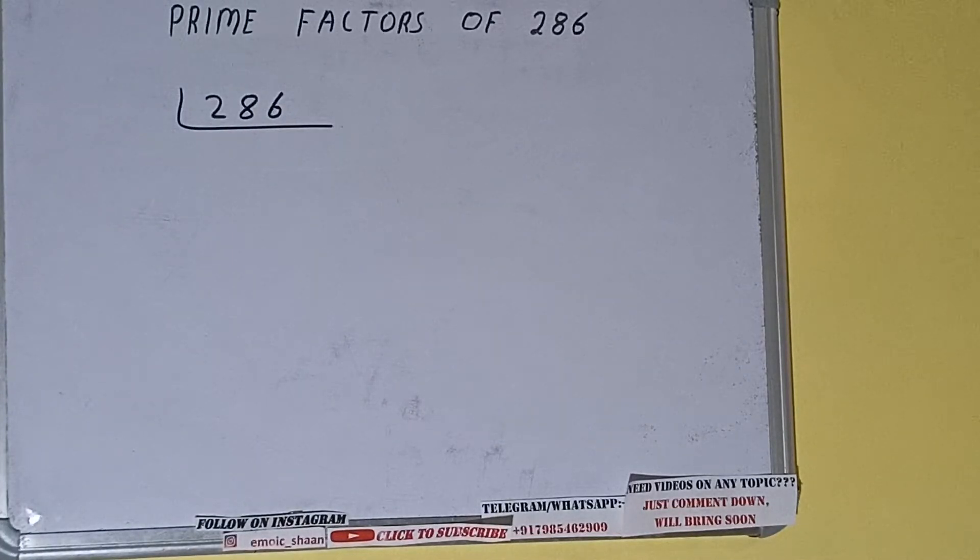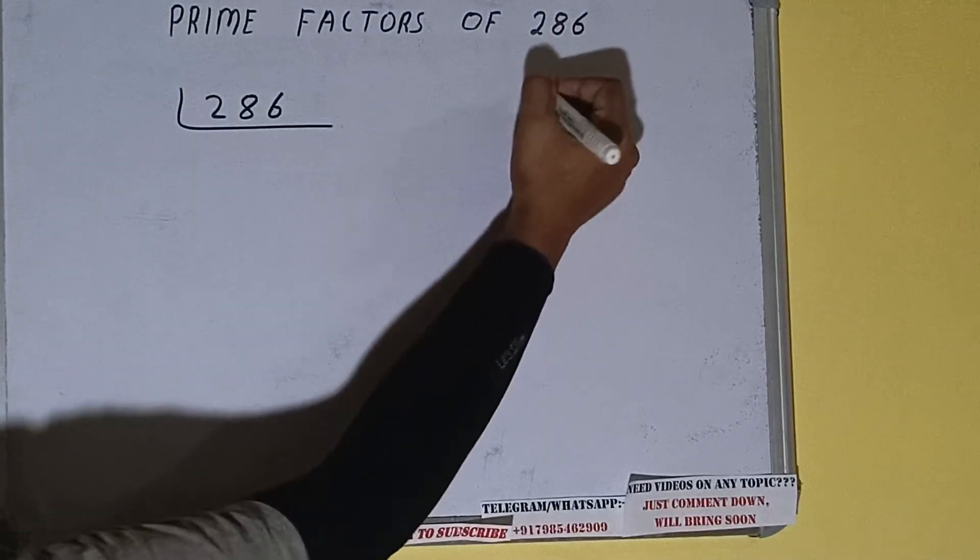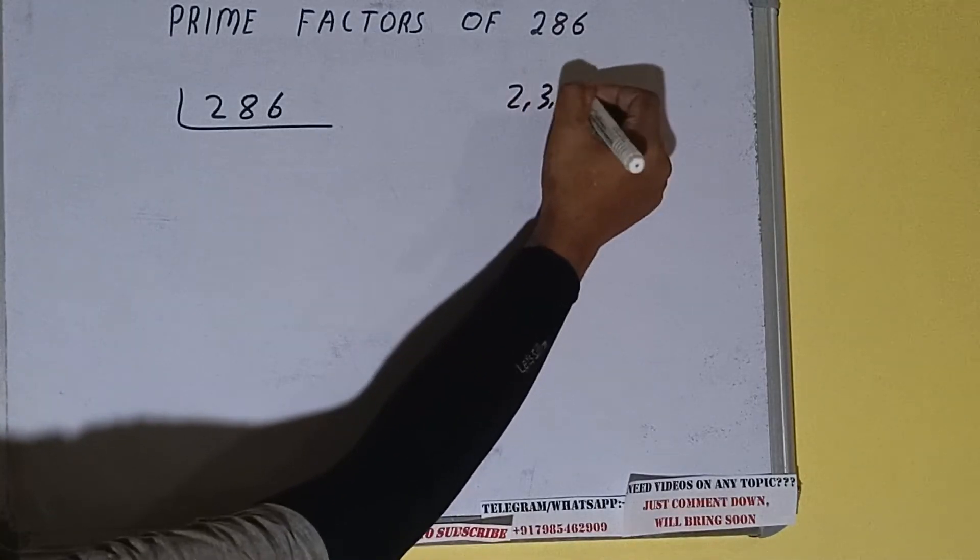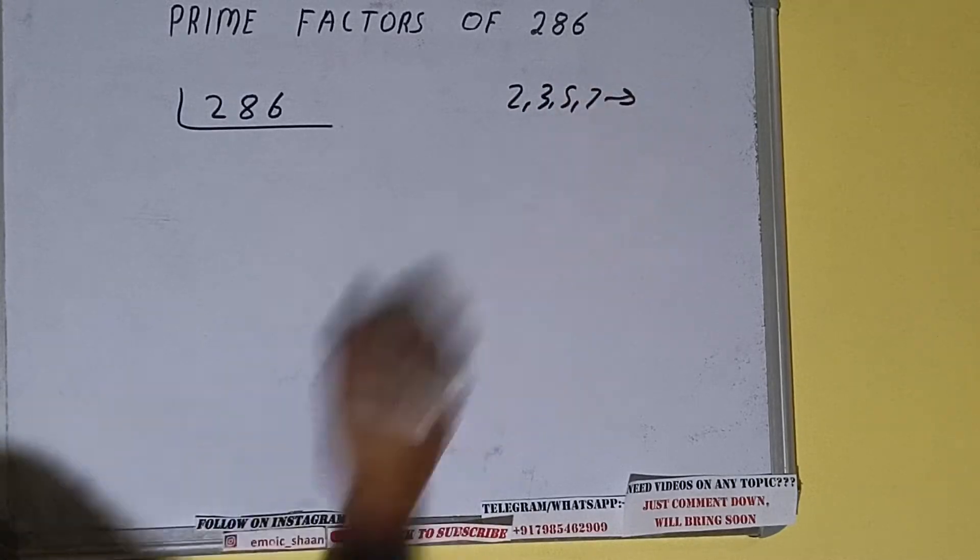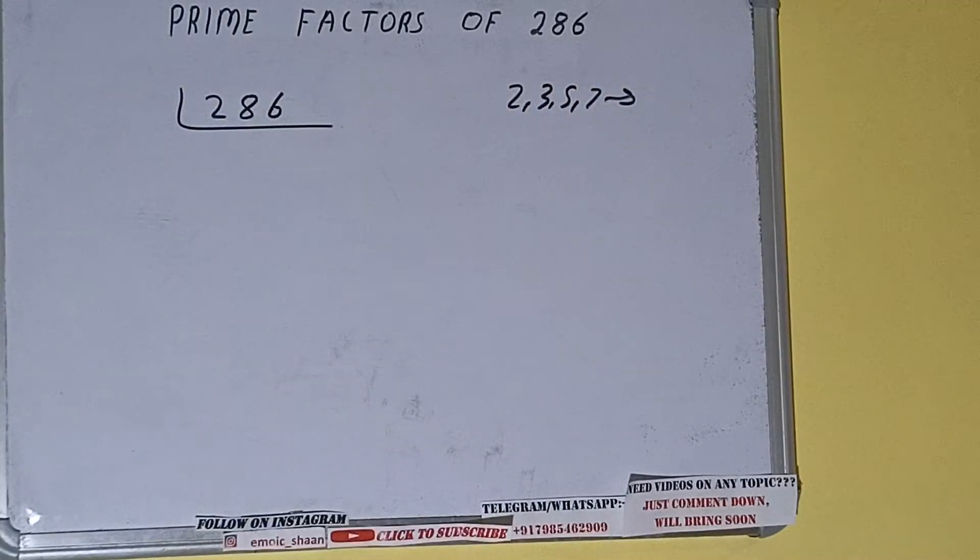Prime numbers are numbers that are divisible by 1 and the number itself, like 2, 3, 5, 7, and so on. Alright, so we'll be checking with the lowest prime number we have, that is 2. Is the number 286 divisible by 2?